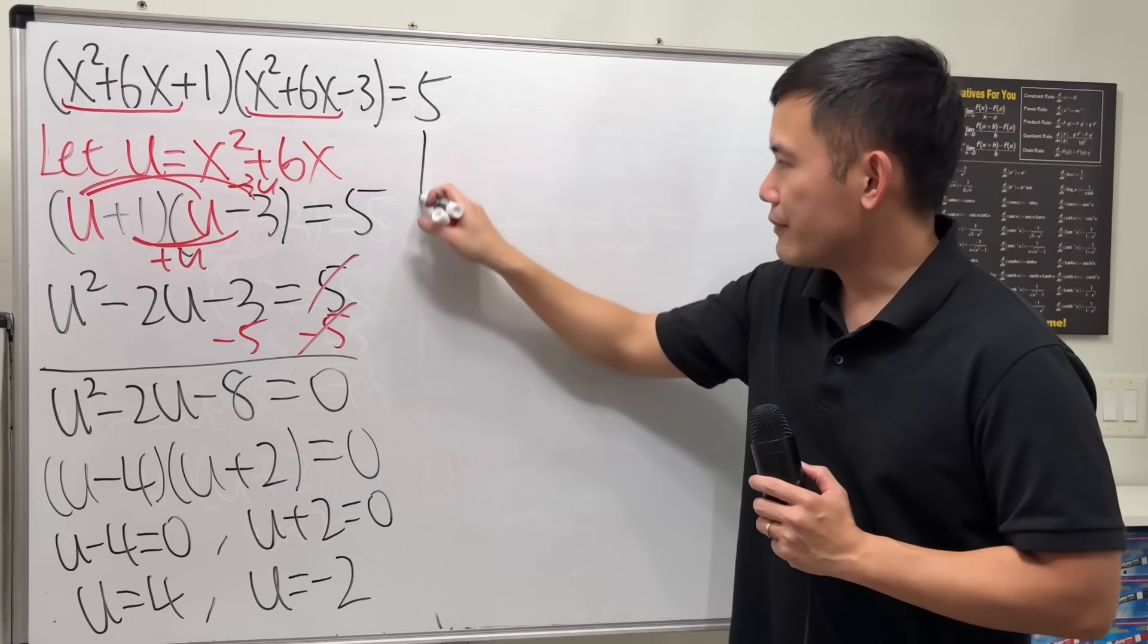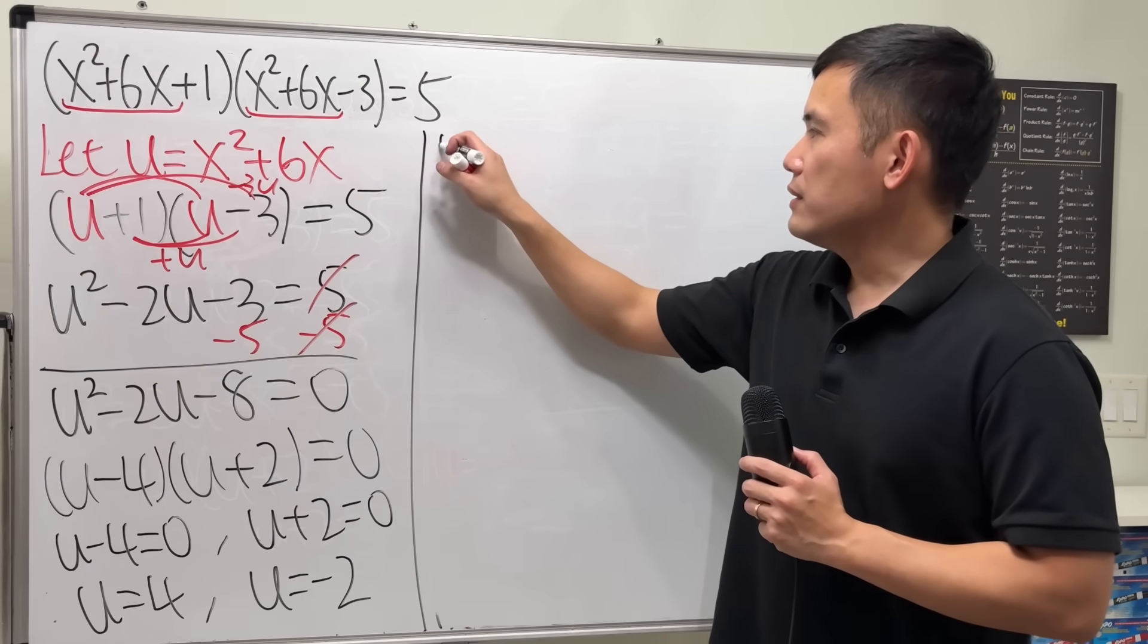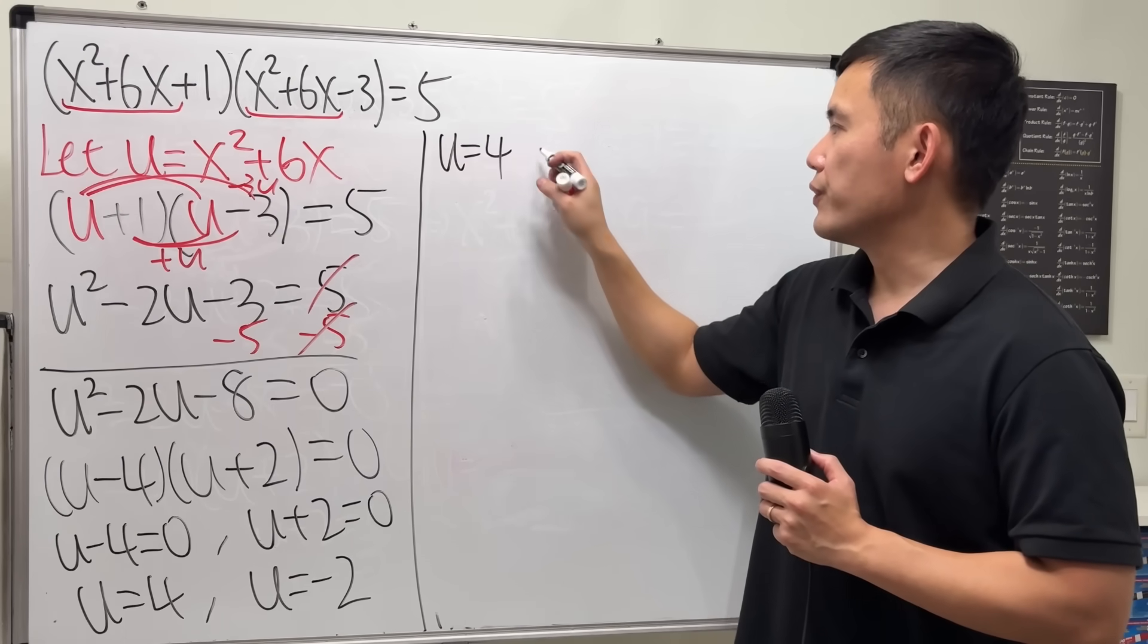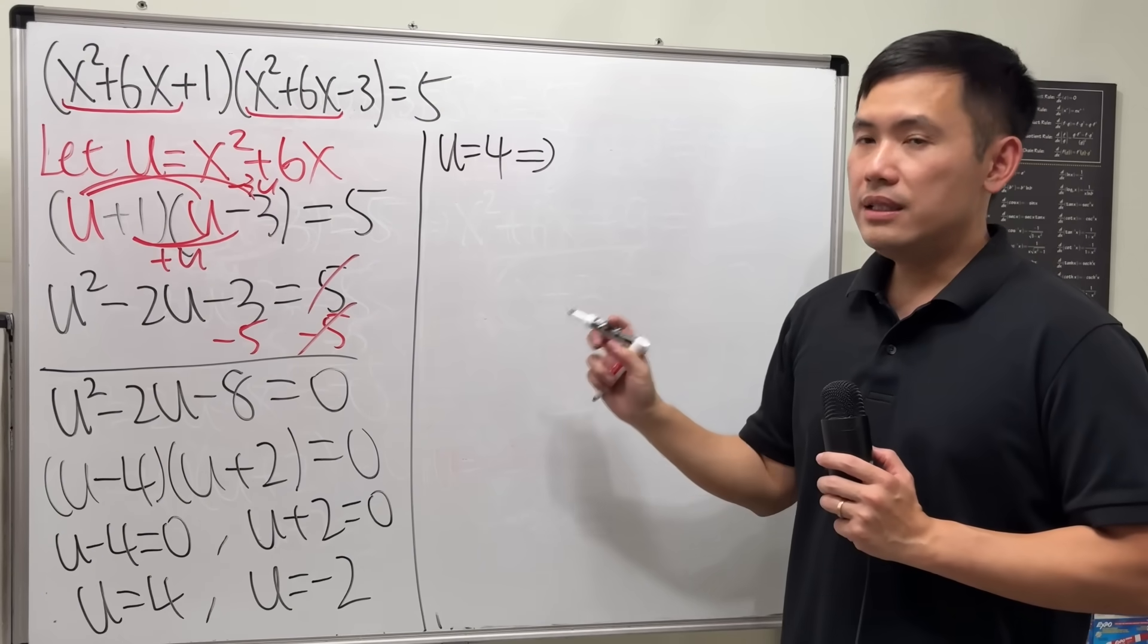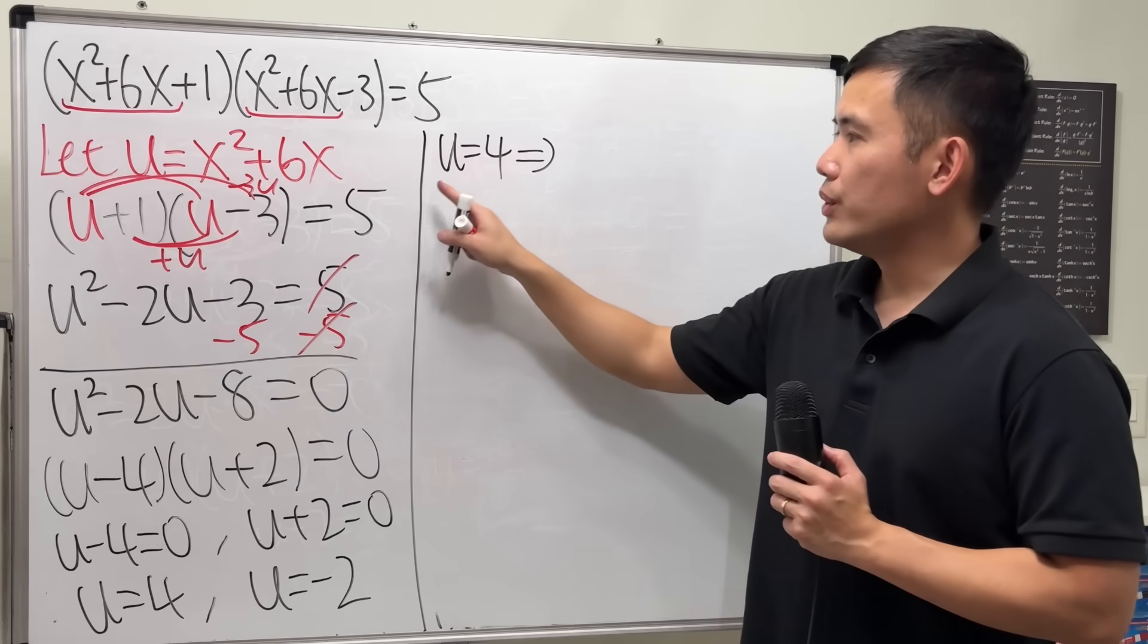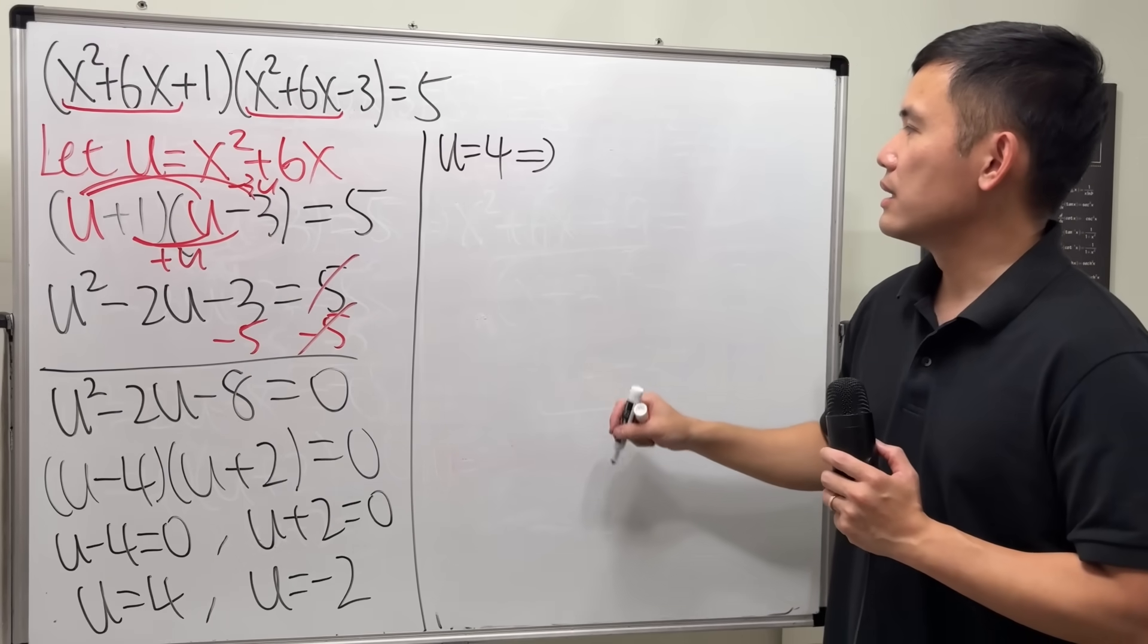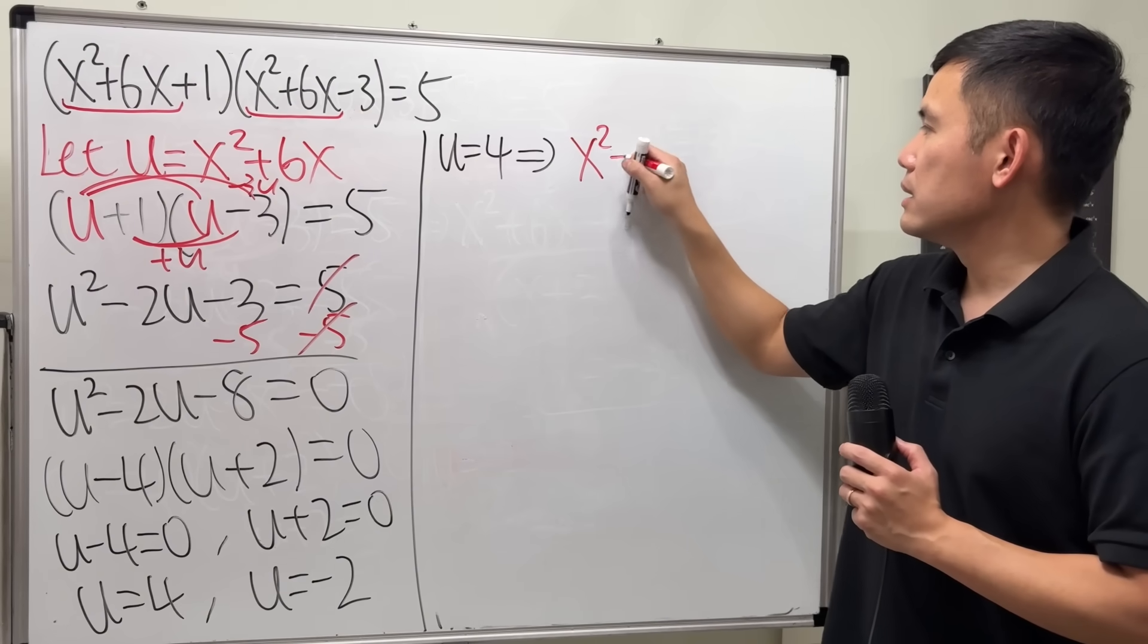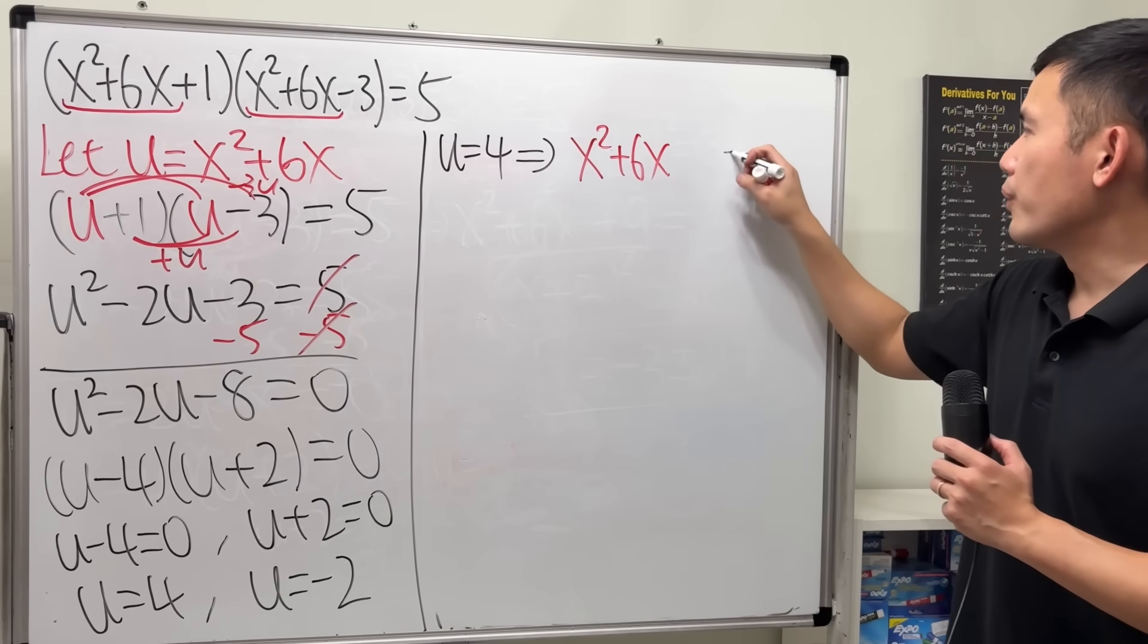So, here we have two cases. The first case is when u is equal to 4. This is going to be what? u is x squared plus 6x. So, we will have that. And now, it's equal to 4.